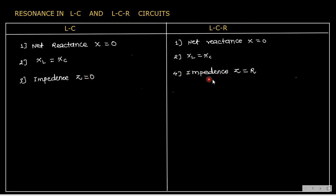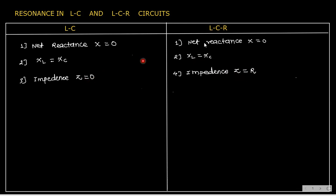In LCR, Z is not equal to zero. When XL equals XC, the circuit behaves as a pure resistive circuit and impedance becomes R, because the ωL minus 1/ωC term becomes zero and Z equals √(R²) which equals R. That's why impedance in LCR is R, while in LC oscillation impedance is zero.